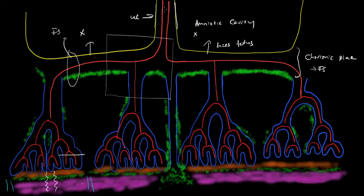Here are the umbilical arteries — I left the veins out so it won't be too complex, but it's really just a parallel system. The umbilical arteries run and ramify within the chorionic plate, so they run radially on top of the fetal surface, and then they have branches — a branch here, a branch here, a branch here. These branches sort of dive down and form the placental parenchyma itself, the substance of the placental parenchyma.